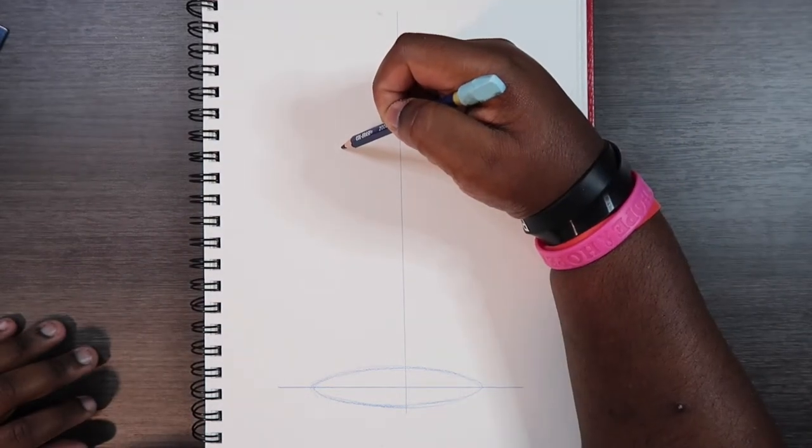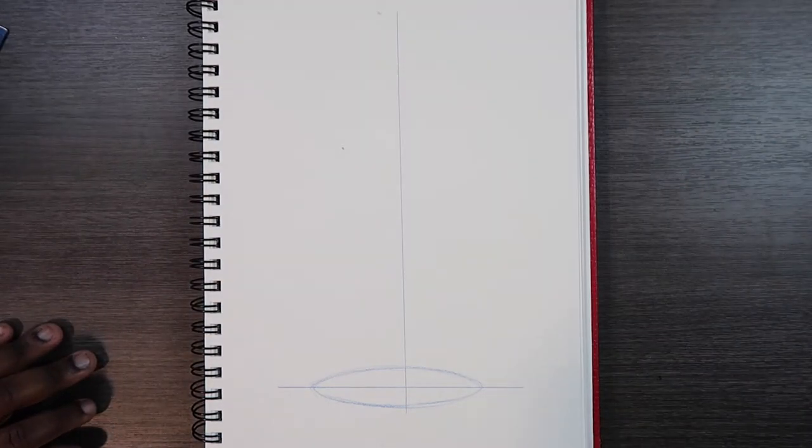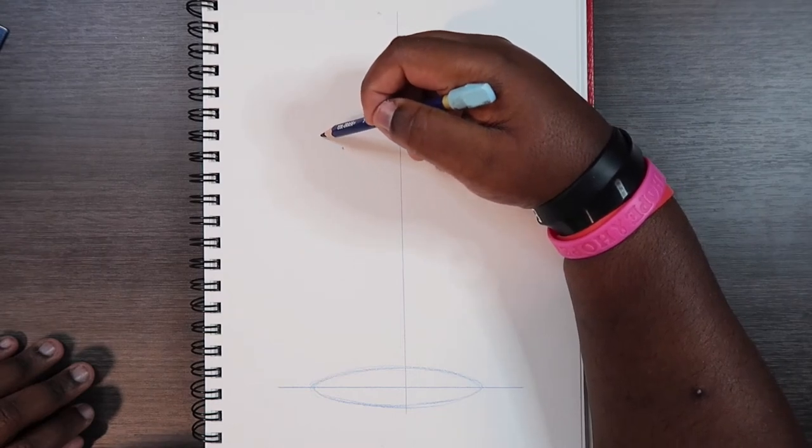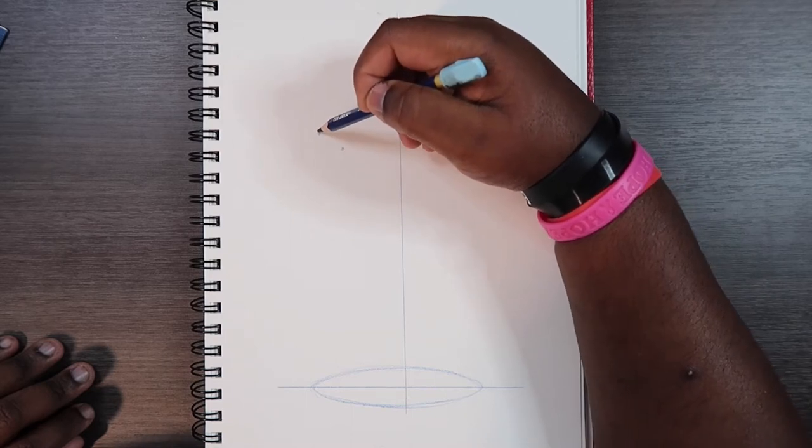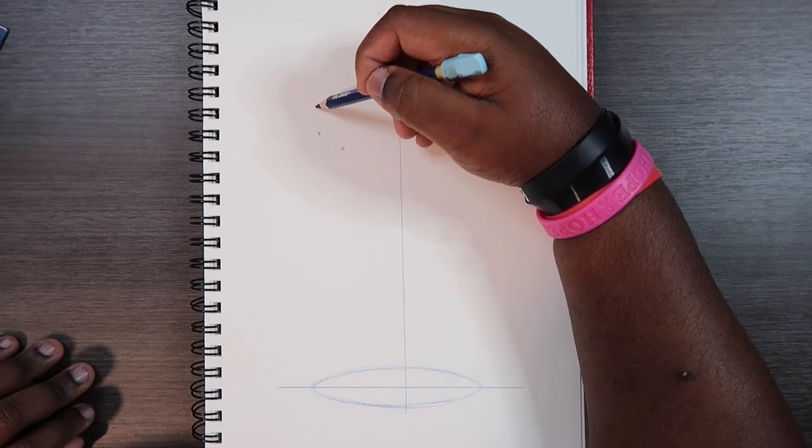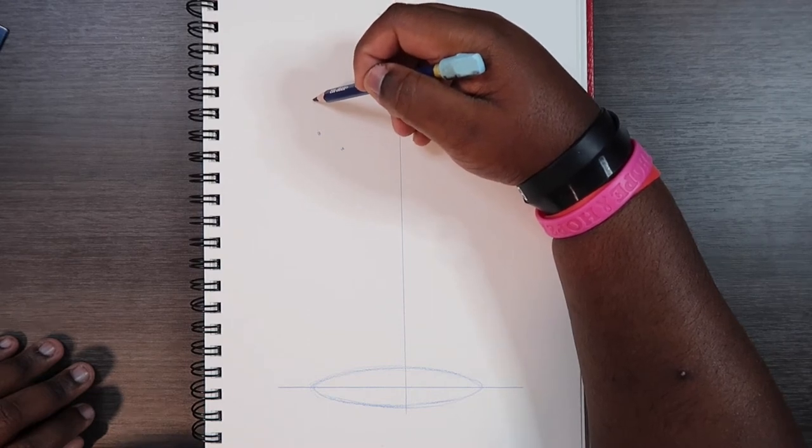So now on either side we can draw a dot. Just a dot, like so. Then we're going to draw another one about two centimeters diagonally this way. And draw another dot. And then we're going to go straight up past this one and we're going to make another dot.